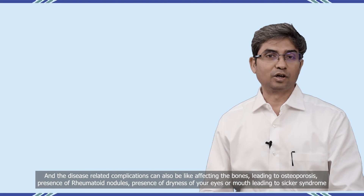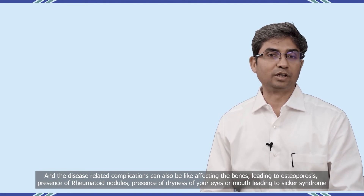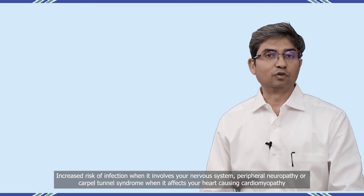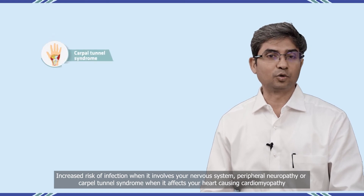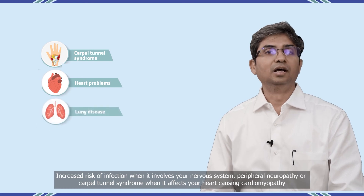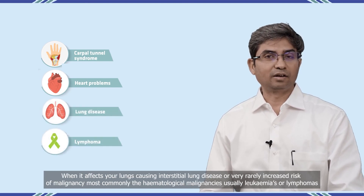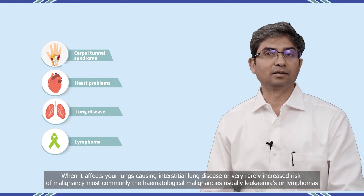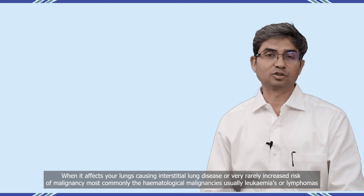Other complications include the presence of rheumatoid nodules, dryness of the eyes or mouth leading to Sjögren's syndrome, increased risk of infection, peripheral neuropathy, or carpal tunnel syndrome when the nervous system is involved. When it affects the heart, it can cause myocarditis or cardiomyopathy. When it affects the lungs, it can cause interstitial lung disease, or very rarely, an increased risk of malignancy — most commonly hematological malignancies such as leukemias or lymphomas.